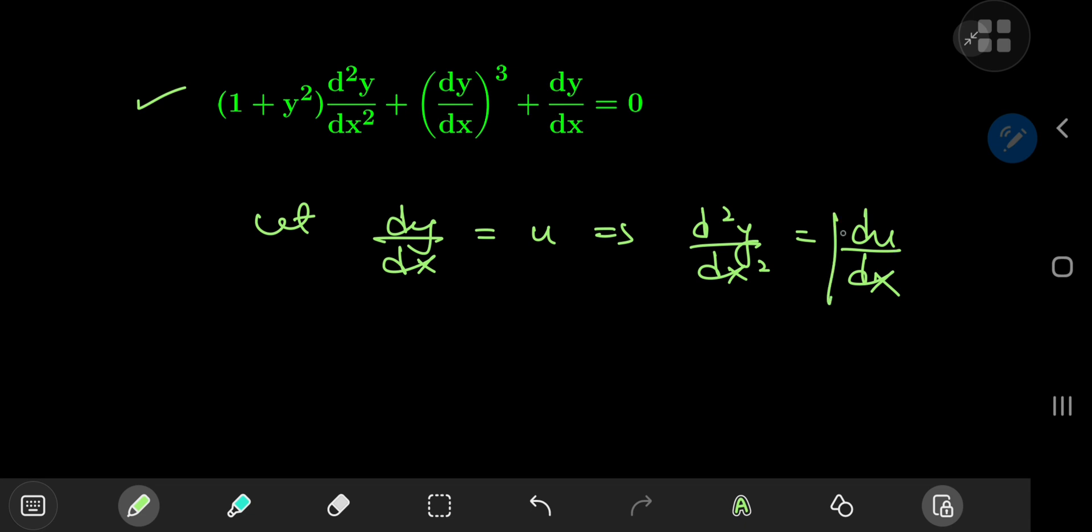But there's a way around this if we can convert this derivative into a structure involving the variables u and y only. For that, we can make use of the chain rule, so we can write the second derivative of y with respect to x as du by dy times dy by dx, and dy by dx is just the u variable. So we have u times du by dy as the second derivative.